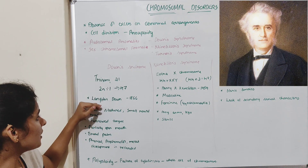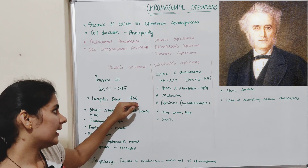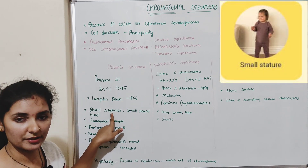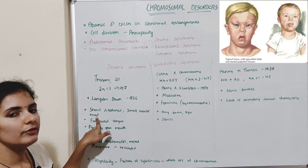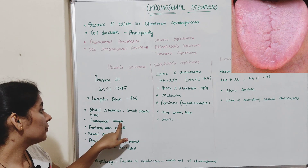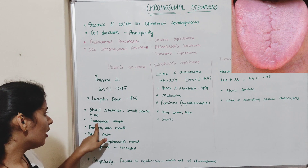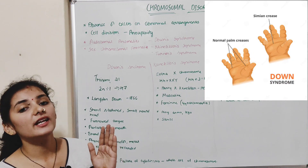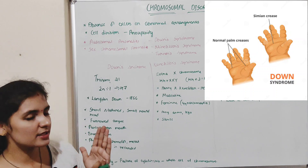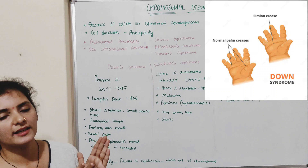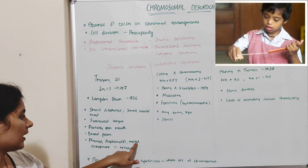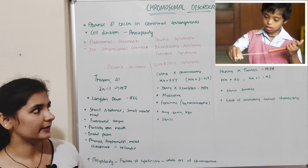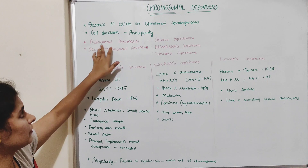Down syndrome is named after Langdon Down, who described this syndrome for the first time in 1866. Individuals with Down syndrome are short in stature with a small round head and straight hair. They have a furrowed tongue and partially open mouth, which is a unique characteristic of this syndrome. They also have broad palms with a characteristic palm crease, and their physical, psychomotor, and mental development is retarded.